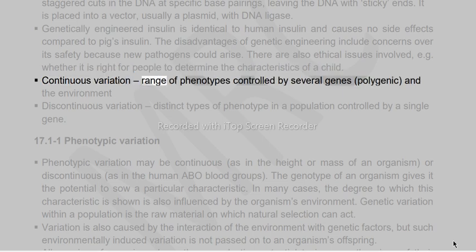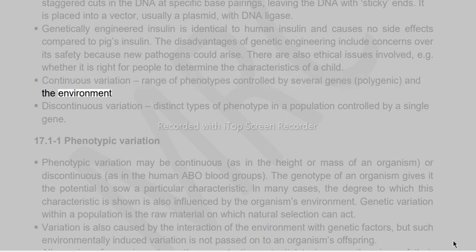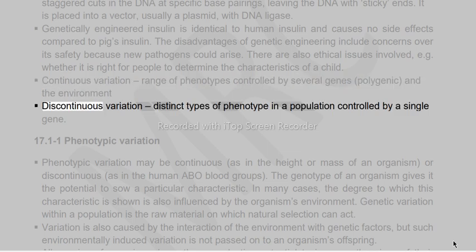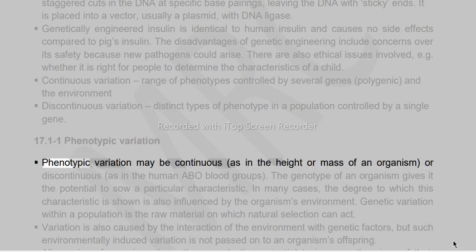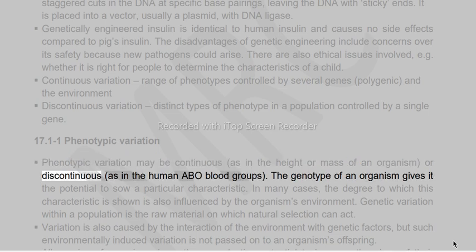Continuous variation produces a range of phenotypes controlled by several genes (polygenic) and the environment. Discontinuous variation produces distinct types of phenotype in a population controlled by a single gene. Phenotypic variation may be continuous, as in the height or mass of an organism, or discontinuous, as in the human ABO blood groups.